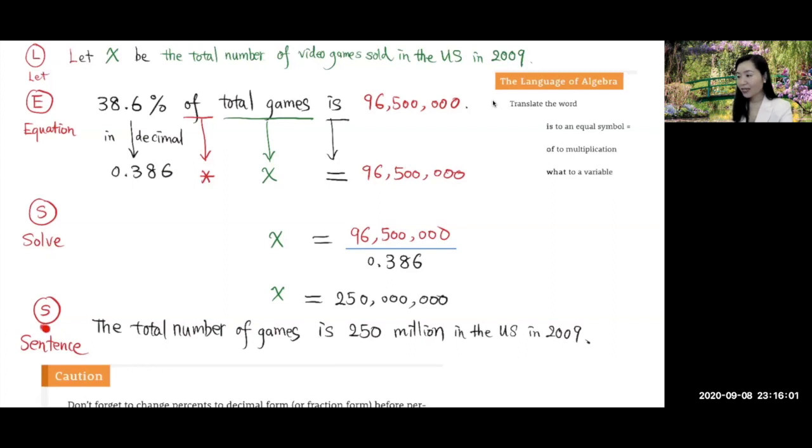And the last part, don't forget the last part. It is a complete sentence. Write a complete sentence to answer whatever they're looking for. They're looking for the total number of video games, right? So the total number of games is 250 million in the United States in 2009. Now the problem is complete.